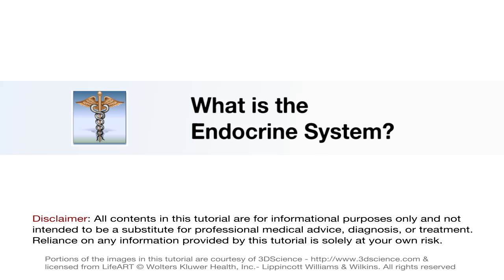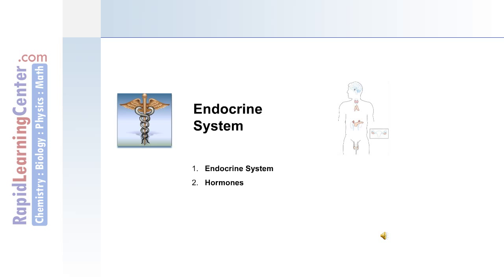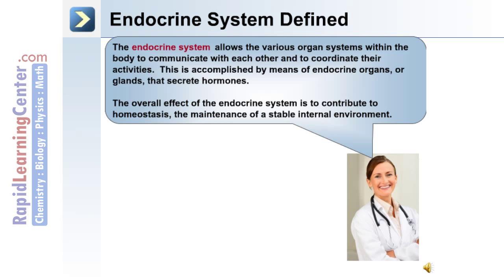Let's begin by discussing the anatomy of the endocrine system as well as the different types of hormones. The endocrine system allows the various organ systems within the body to communicate with each other and to coordinate their activities. This is accomplished by endocrine organs that secrete key hormones. The overall effect of the endocrine system is to contribute to homeostasis — the maintenance of a stable internal environment.